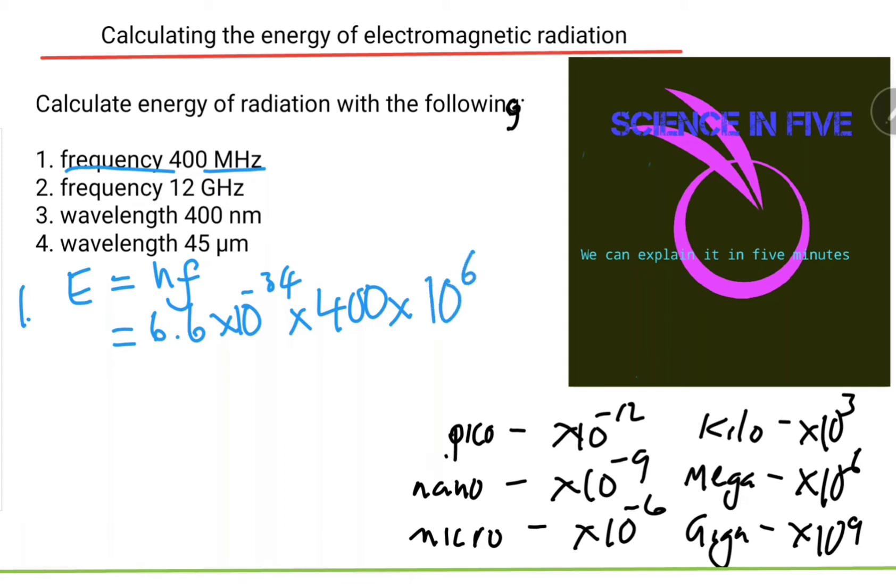2.64 times 10 to the negative 25 joules. That's 2.64 times 10 to the power negative 25 joules.